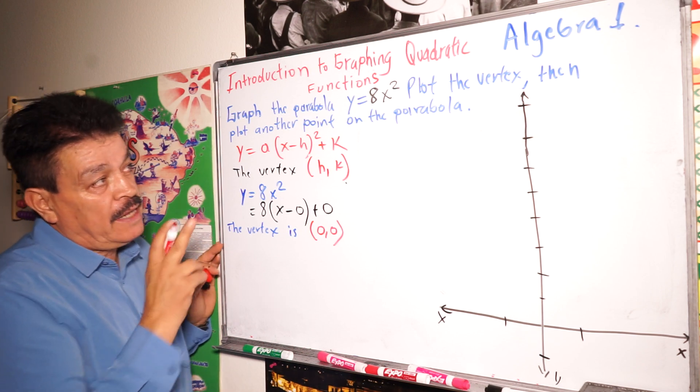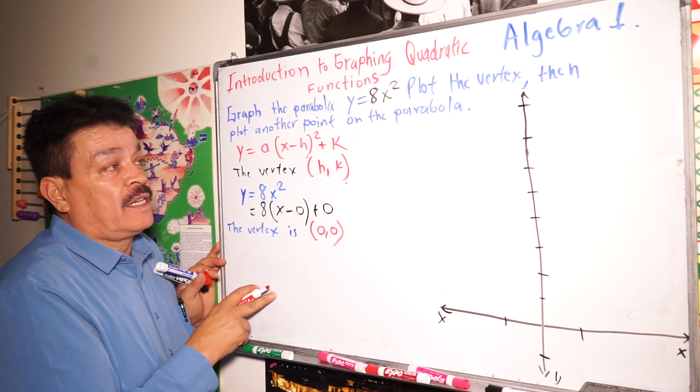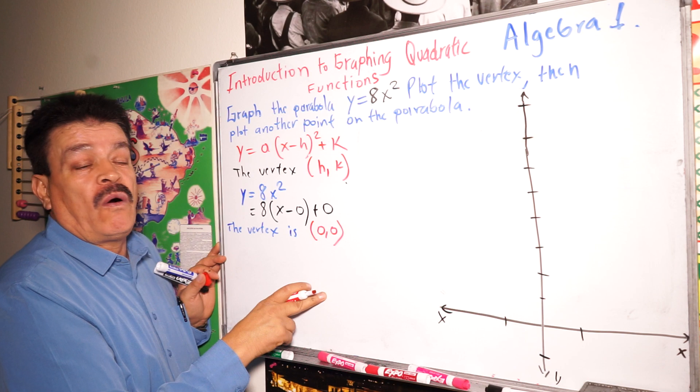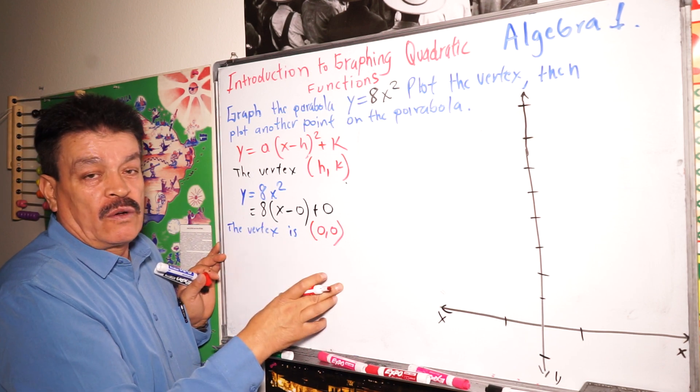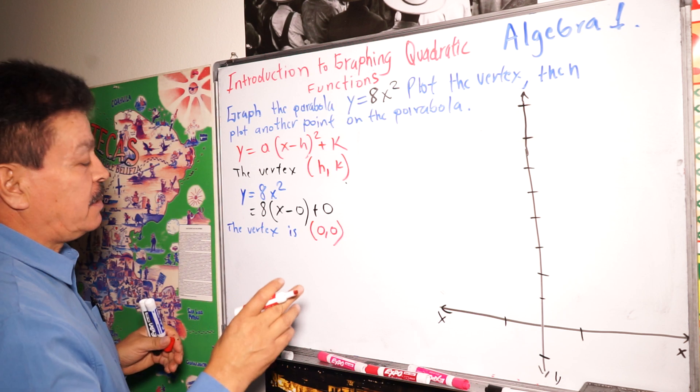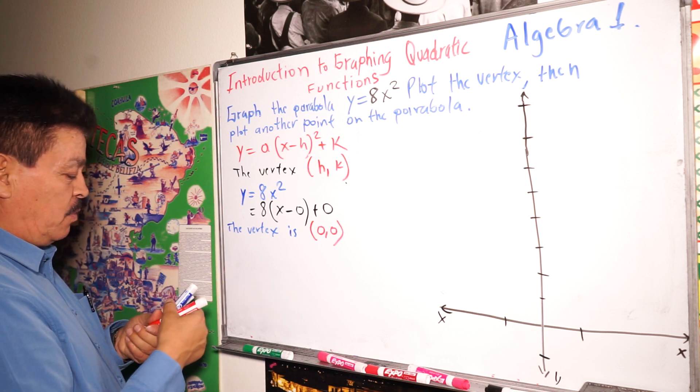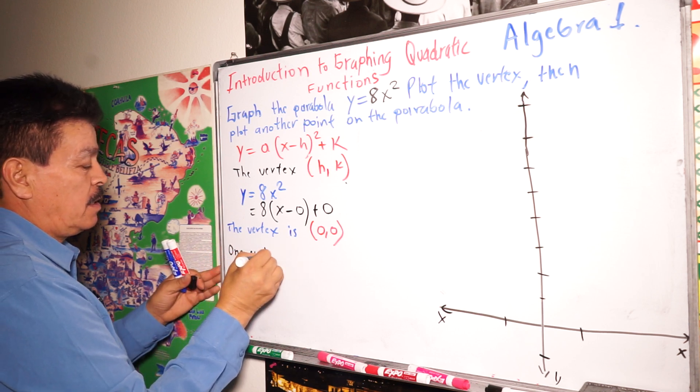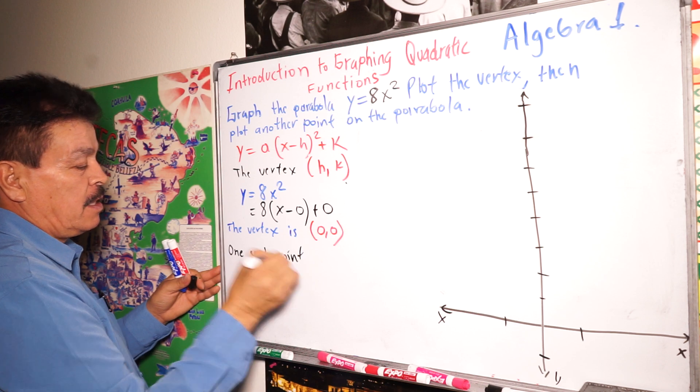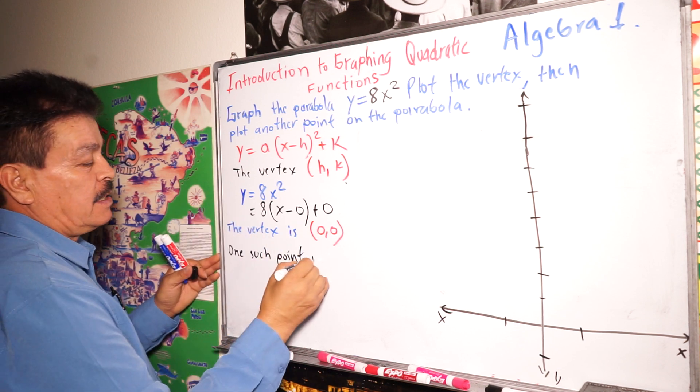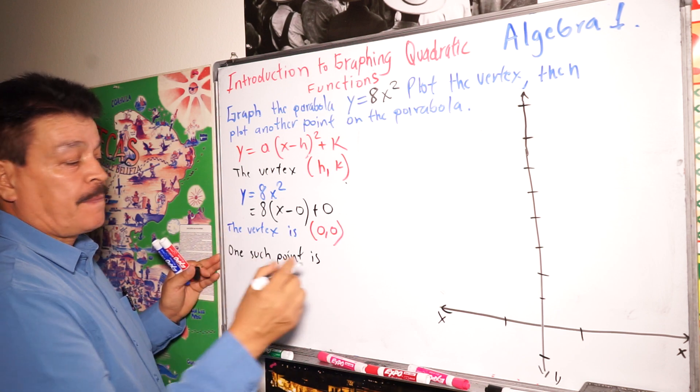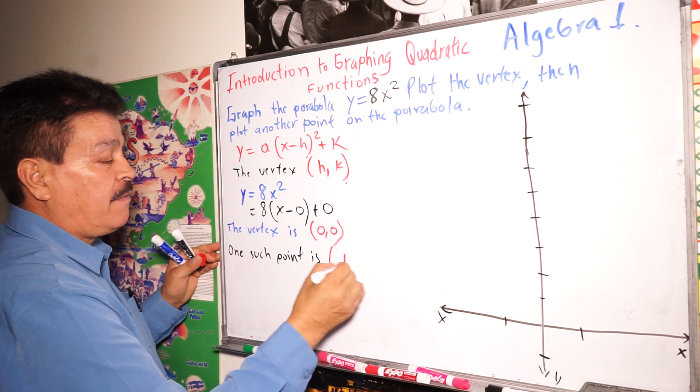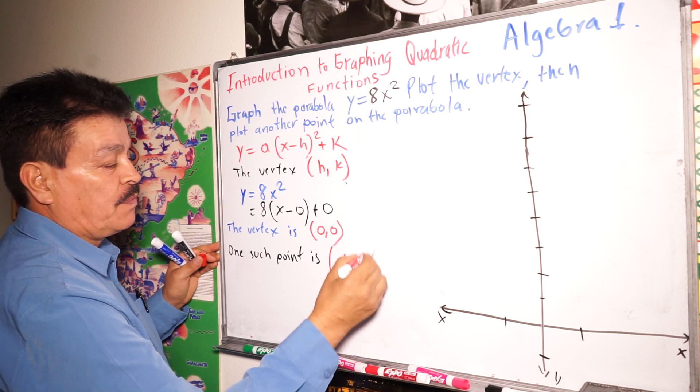Now look for another point here. We have to find another point on the parabola with integer or half integer coordinates. So one such point is, in this case, one half comma two.